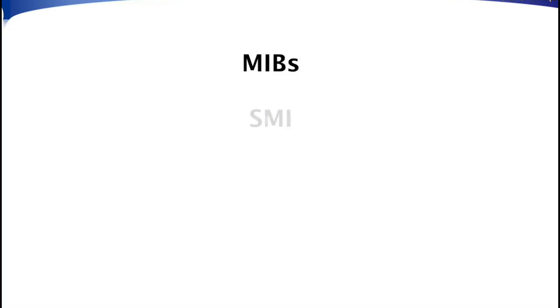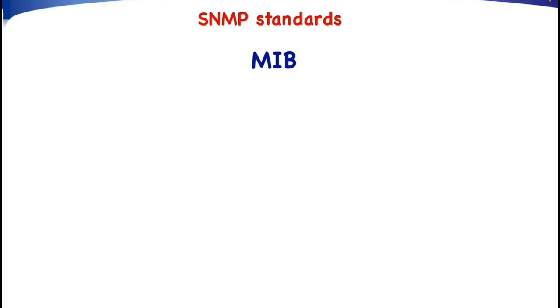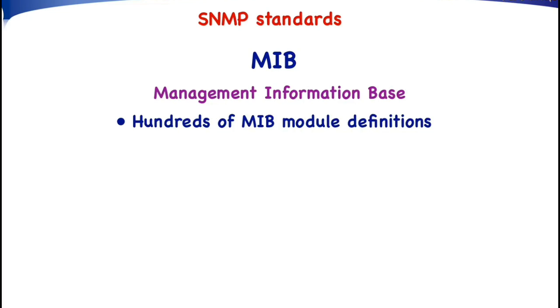There are three main types of standards: management information bases, the structure of management information, and the SNMP protocols. The first category are the MIB standards — MIB stands for Management Information Base. Although there is conceptually a single management information base, the information is divided over hundreds of MIB modules, and we have standardized within the IETF hundreds of MIB module definitions.